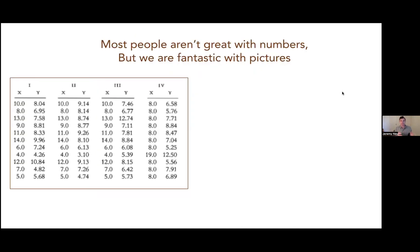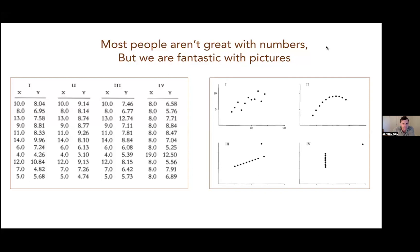Part of the reason I think data literacy and data visualization is so important is because most people aren't great with numbers. You give something to your class, your boss, or a senior policymaker that has a big spreadsheet of numbers — they can't really make heads or tails of what's going on. But when we start to visualize it, the images on the right are the exact same values we see on the left, yet patterns emerge and we can start to actually make sense of trends, outliers, and motion. We are very visual learners, and using pictures allows us to make sense of the world in a clearer way.